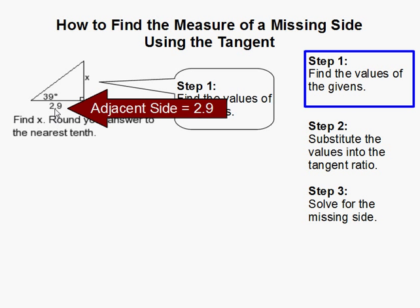We're given the adjacent side. I know it's the adjacent side because it's next to the angle, but it's not the hypotenuse. Remember the hypotenuse is the side that's opposite the right angle, and it's always the longest side when you have a right triangle.